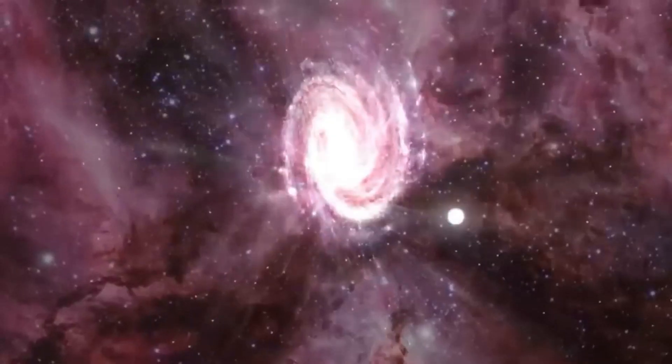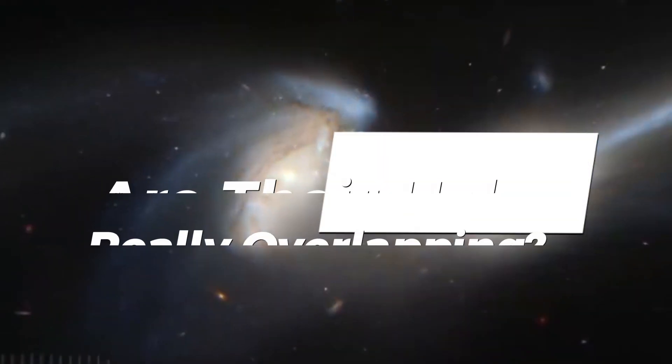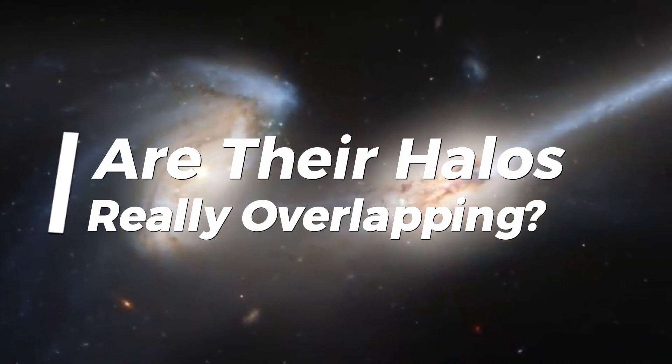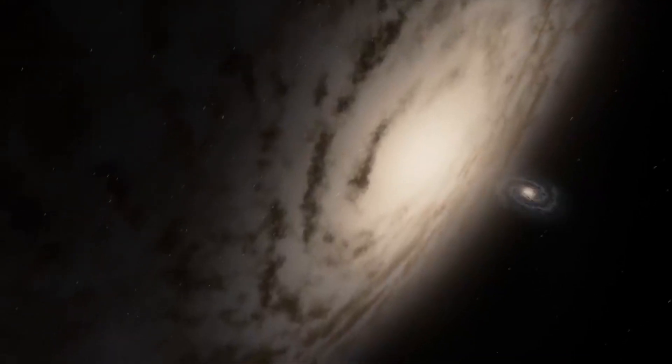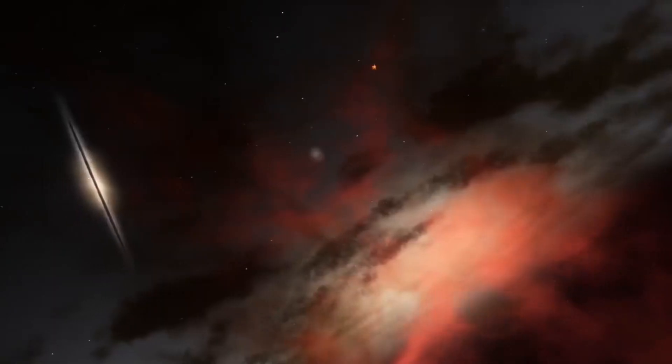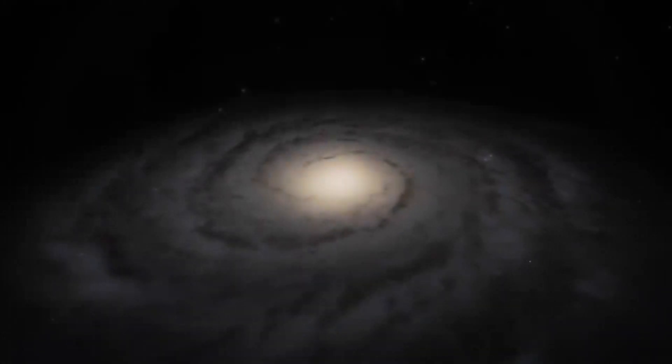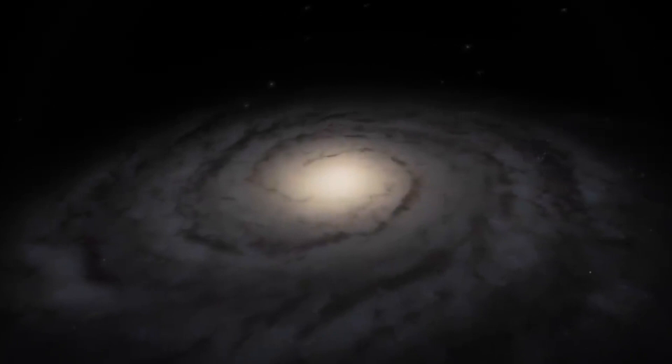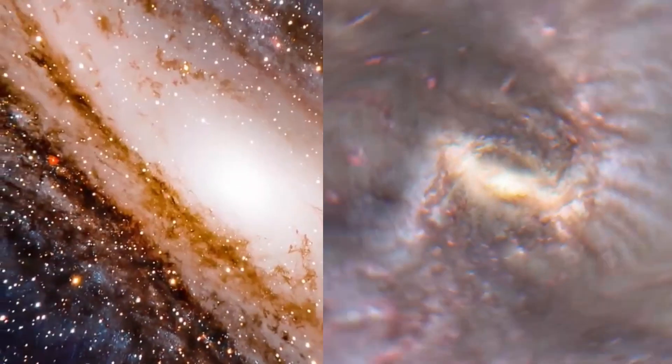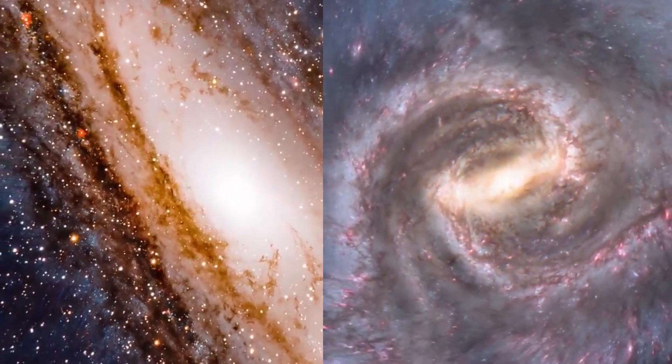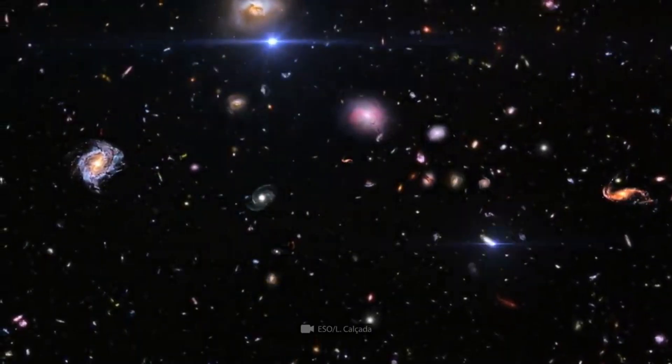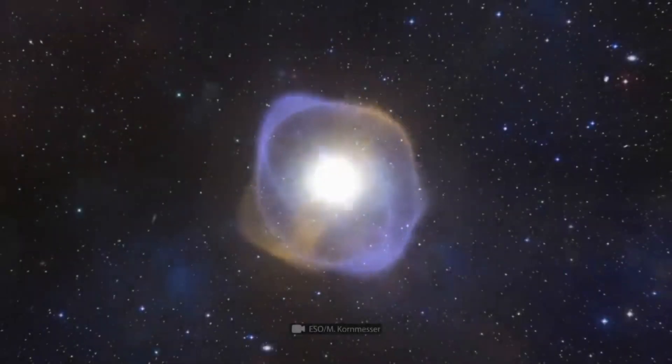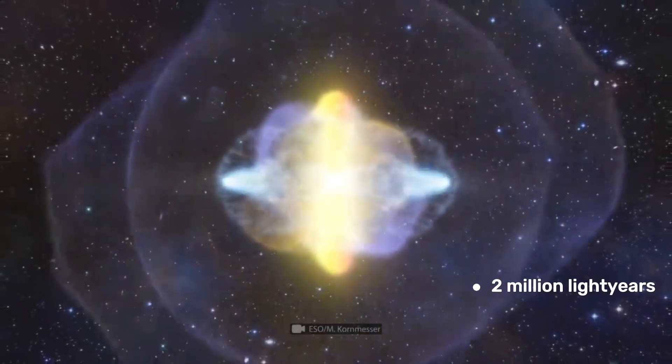Given Andromeda's vast halo intruding toward the Milky Way, you may wonder, are their halos really overlapping? Unfortunately, we can't directly observe our own galaxy's halo structure from the inside. But we can make an educated guess based on Andromeda's striking similarities to our Milky Way. The two galaxies are analogous in shape, mass, and stellar populations. So astronomers infer the Milky Way's halo likely spans a comparable 2 million light years.